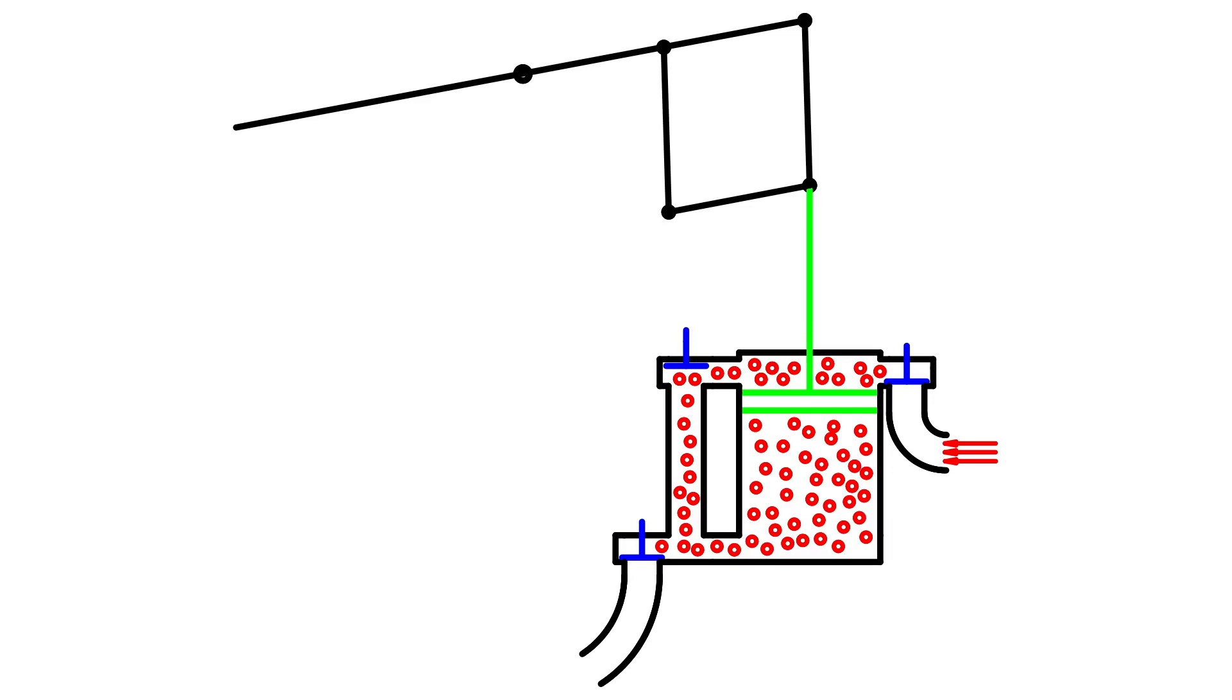In bottom dead center, the exhaust valve is closed and the equilibrium valve is opened. Pressure above and below the piston equalizes.